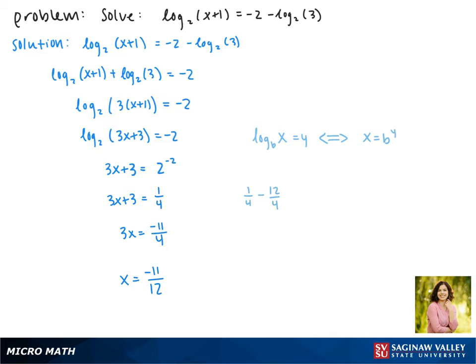Now with logarithms we have to check for extraneous solutions since we can't take the logarithm of a negative number. So we'll plug in our answer here and make sure that the argument, what we're taking the log of, is positive. This negative 11 twelfths plus 1 is positive, we're not taking the log of any negative numbers, so negative 11 over 12 is a solution.